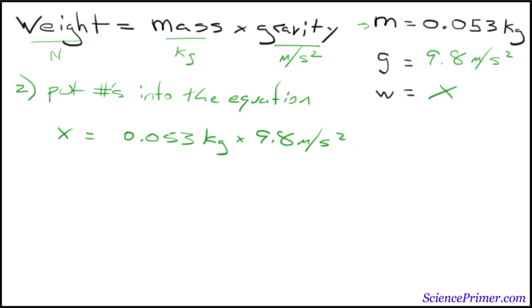So, we'll go ahead and put that in for now. It's a bigger number than we need. But we now know that X equals 0.5194 kilograms meters per second squared.